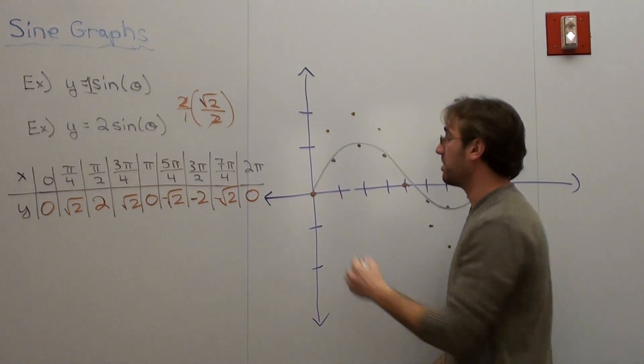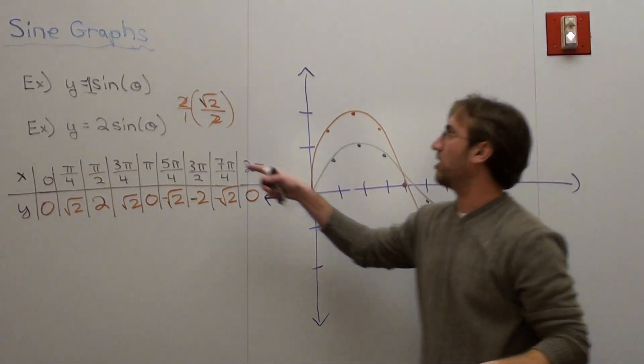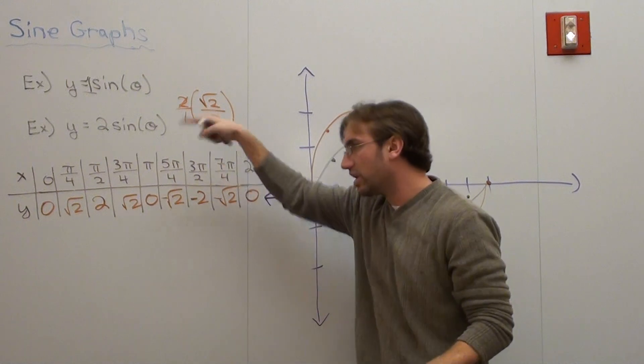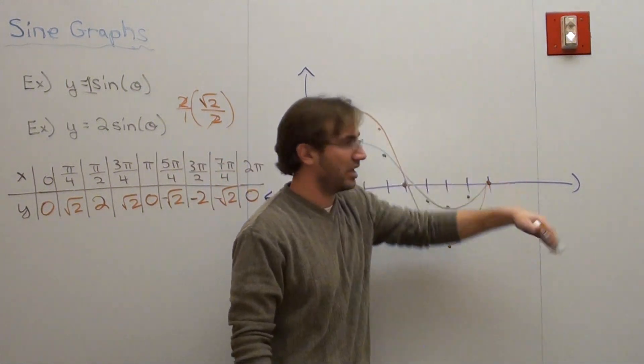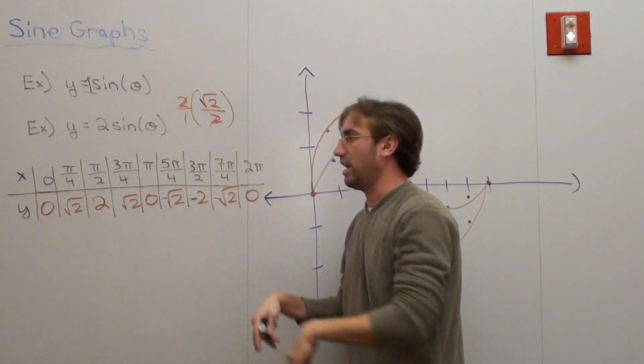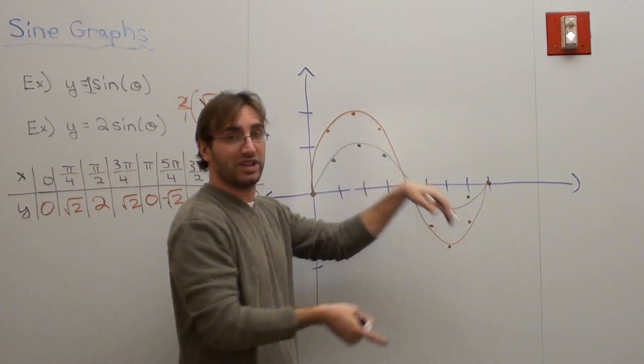So basically what happens is it displays the same characteristics. If I keep going, it's going to do this. If I keep going, it's going to do this. It continues. It's going to continue that way. Basically what I'm trying to say is that its domain extends from negative infinity to infinity.